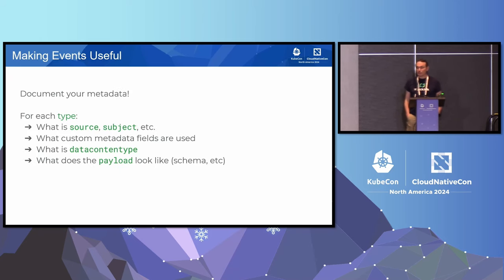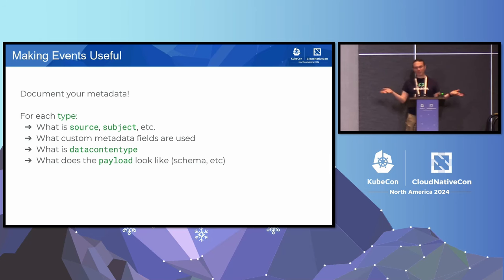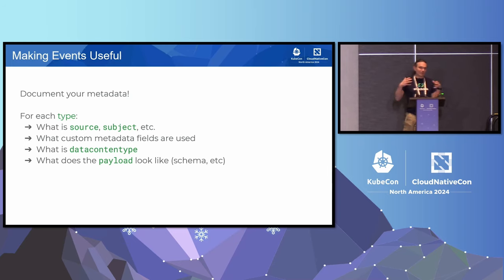If you're going to make these events useful, here are a couple of tips: document what these things look like. Cloud Events is like HTTP — HTTP is handy, but if you don't have definitions for all those headers, nobody can really agree. Write down what the source means in your case, what the subject means, what your custom metadata is, what your schema and content type are, and what the payload fields look like. And with that, happy eventing!